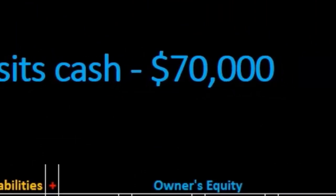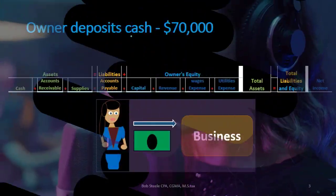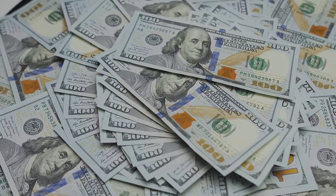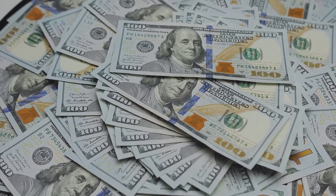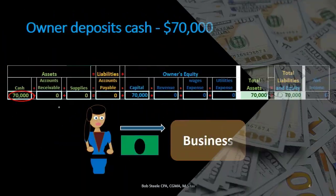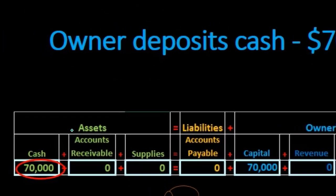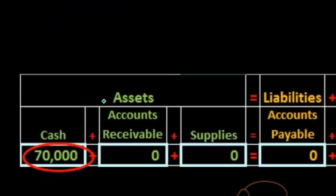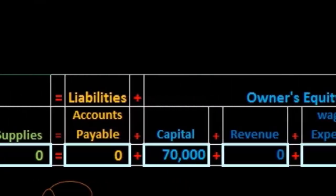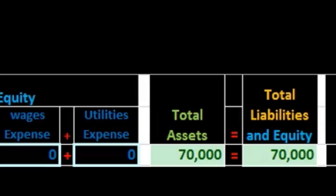First transaction: owner deposits cash $70,000. I'll go through the thought process we'll use all the way through recording journal entries. Is cash affected? Of course it is — we're dealing with the cash account, and cash is going to be increasing. Cash is within the assets section. Then we need to know what the other side of the transaction is.